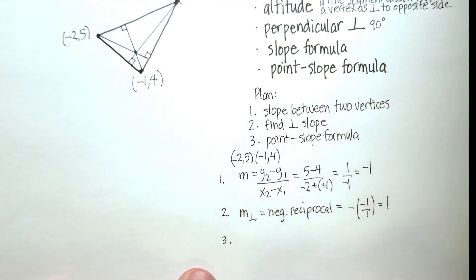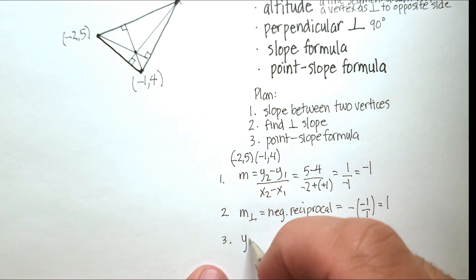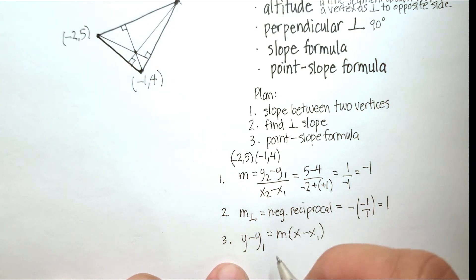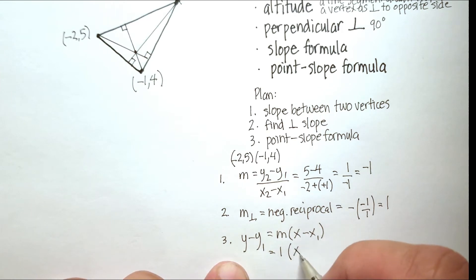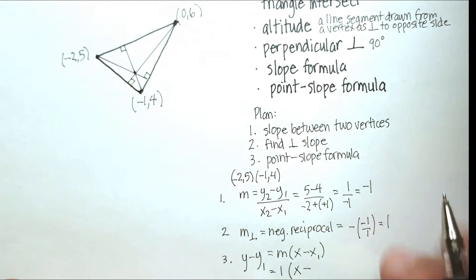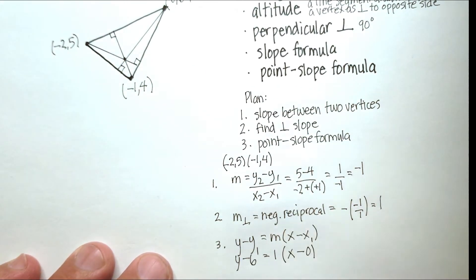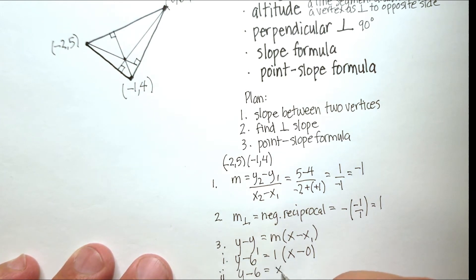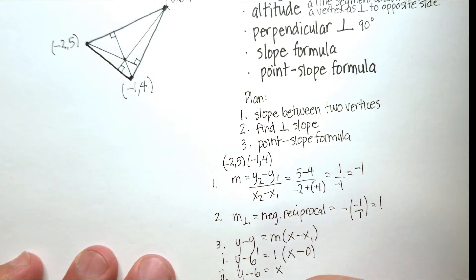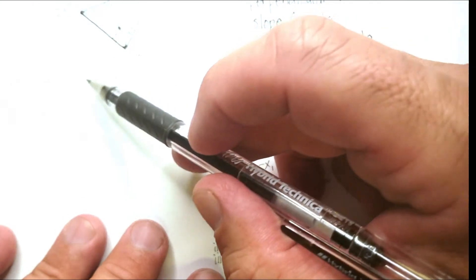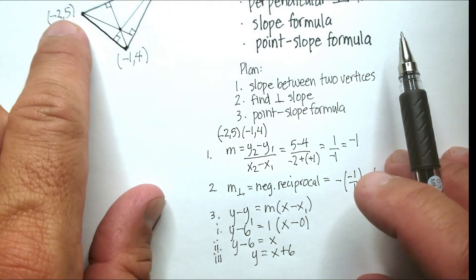Using the point-slope formula y − y₁ = m(x − x₁) with slope 1 and point (0, 6): y − 6 = 1·(x − 0). Distributing gives y − 6 = x. Adding 6 to both sides: y = x + 6. That is the equation for this first altitude line.